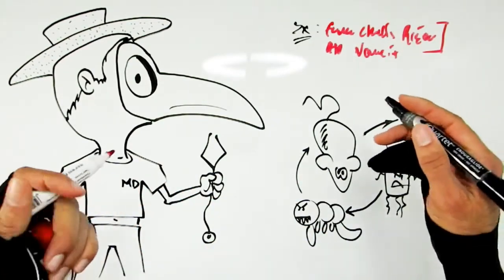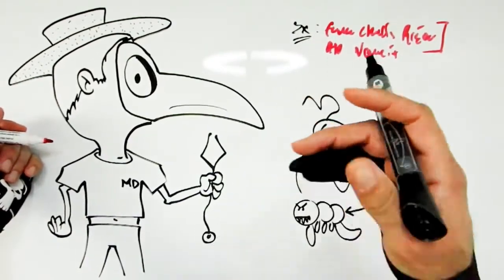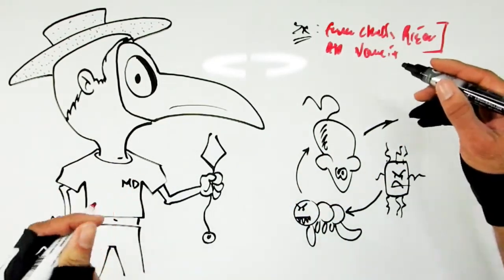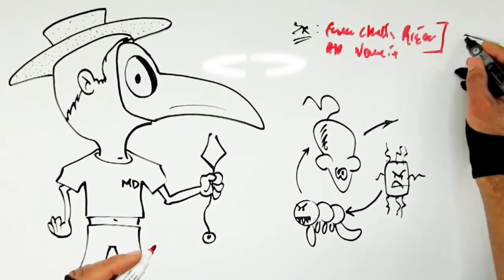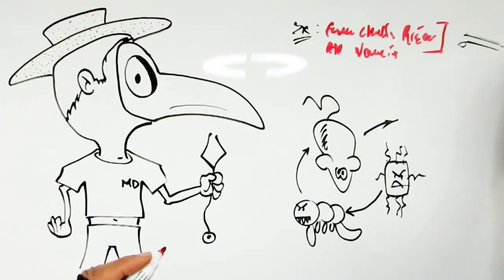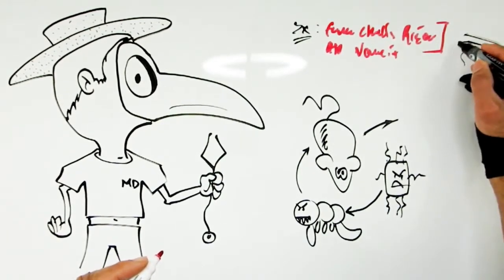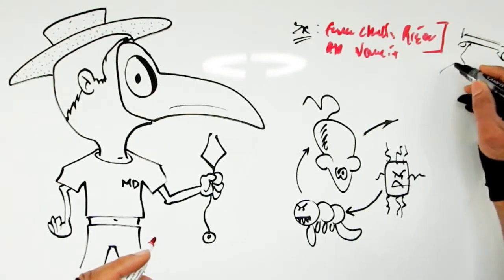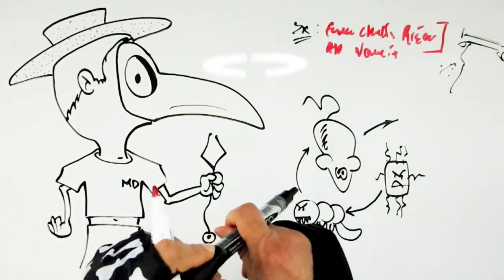The buboes basically are enlarged lymph nodes. So you would know sometimes like if you had strep throat for example you feel inside your neck and you feel like some big bulging lymph nodes. This is that kind of lymphadenopathy on steroids. So for example under the individuals armpits you get like lumps.